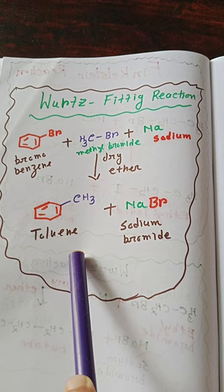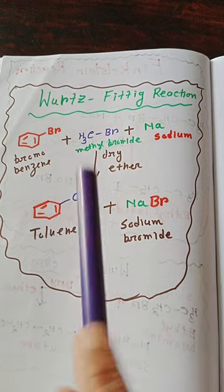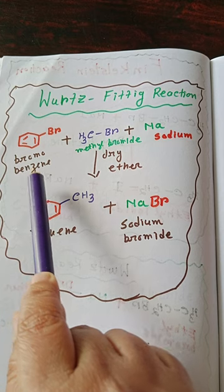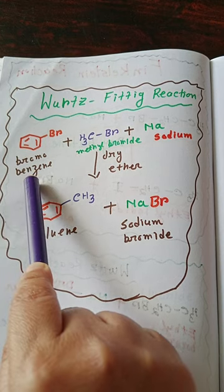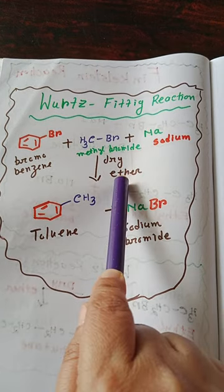So the Wurtz-Fittig reaction is used to make aromatic hydrocarbons from an aryl halide and an alkyl halide.